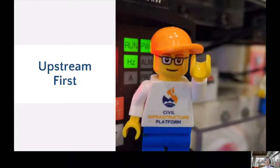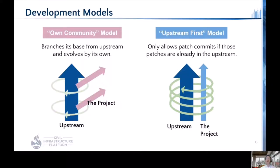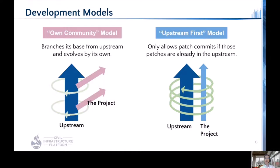Upstream first is our development principle. Here, two development models are pictured. The model on the left is the own-community model, where the project branches from upstream and evolves by its own. This model enables the project to ramp up quickly, but in the long run it becomes difficult to incorporate upstream patches due to conflicts.